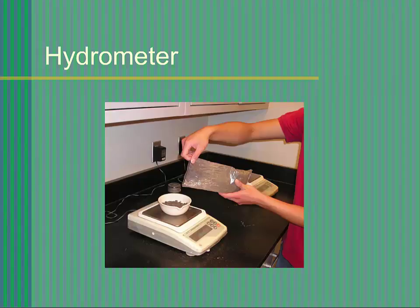For the test, a sample size of 50 grams is needed. If your sample contains a large percentage of soil larger than the number 200 sieve, then use about 100 grams.